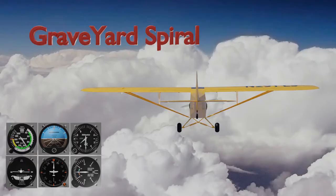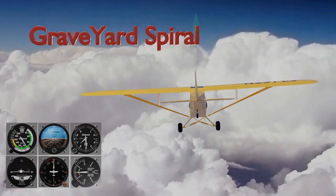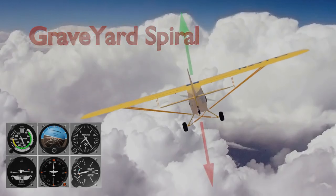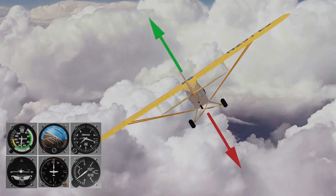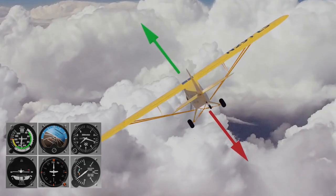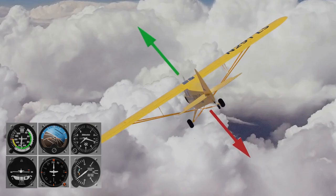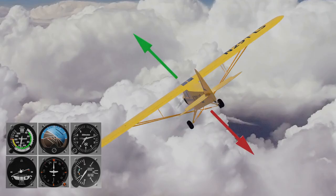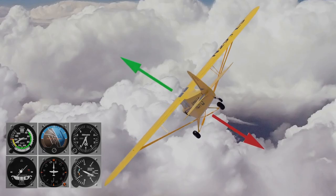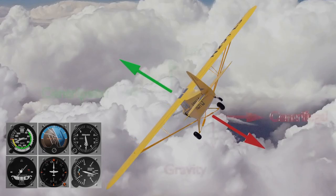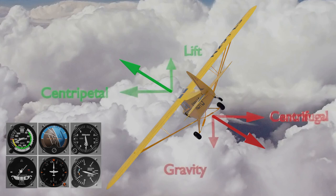With this understanding, the events in a graveyard spiral become more apparent. The initial event is a gentle unrecognized banking turn without any recognized control inputs. Without aileron input and the resultant adverse yaw, this will likely result in a nearly coordinated turn or slight skid. The increasing bank will result in increasing centripetal force and decreasing vertical lift. This will result in loss of altitude, increasing pitch down and further bank.